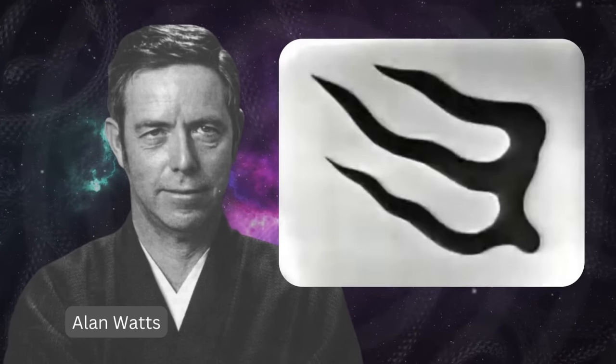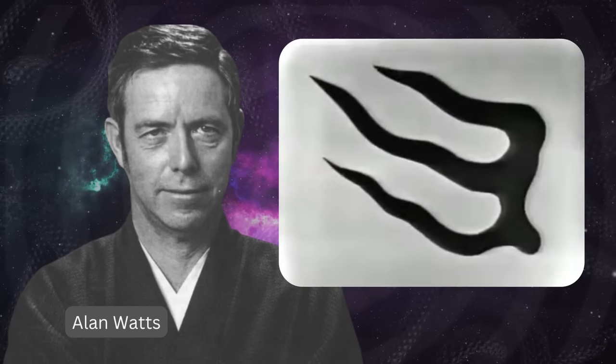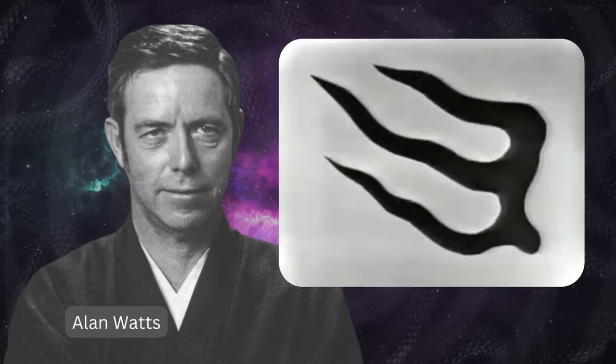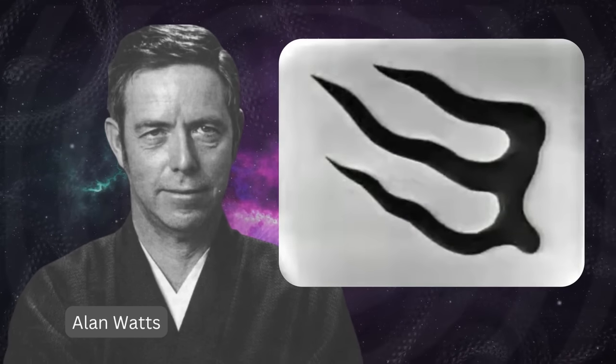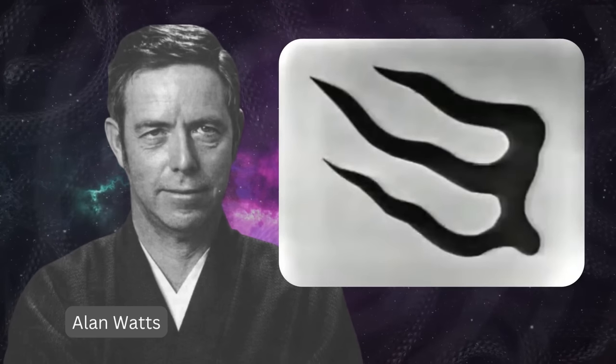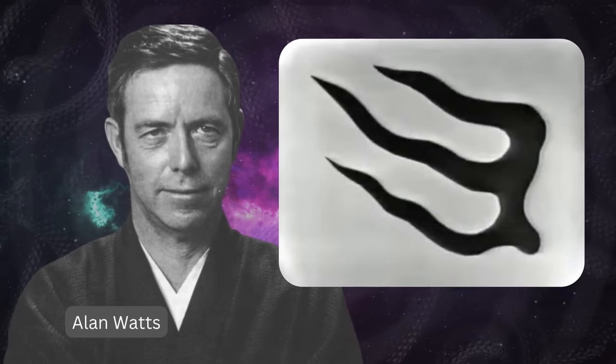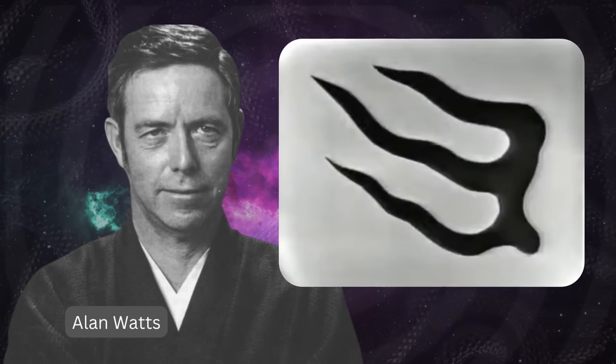So I think we should start in this sort of discussion, asking what is science? First of all, science is a method of description. If we have a form of this kind, a rather wiggly form, as I've sometimes said, the natural world is full of wiggly forms. And science, in dealing with the natural world, is an attempt to describe them exactly.